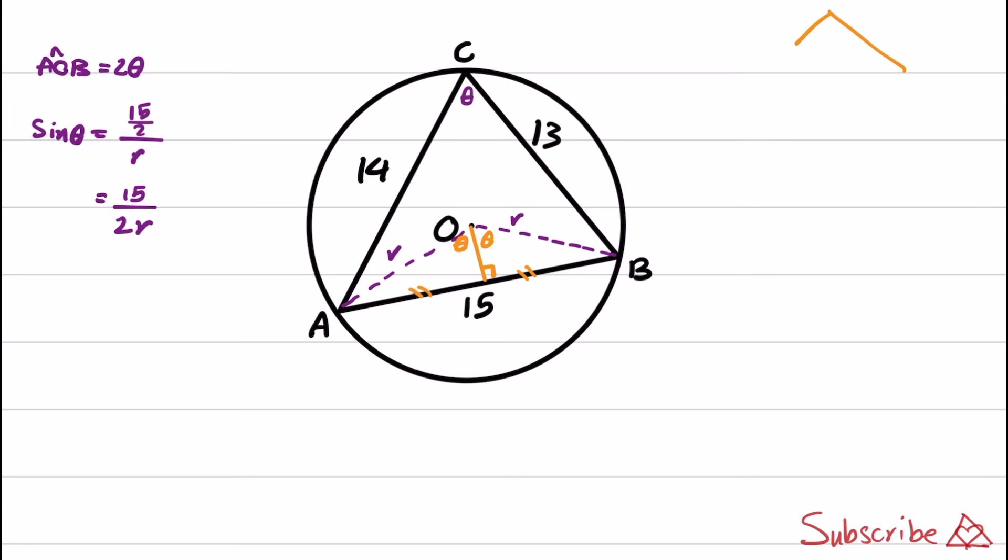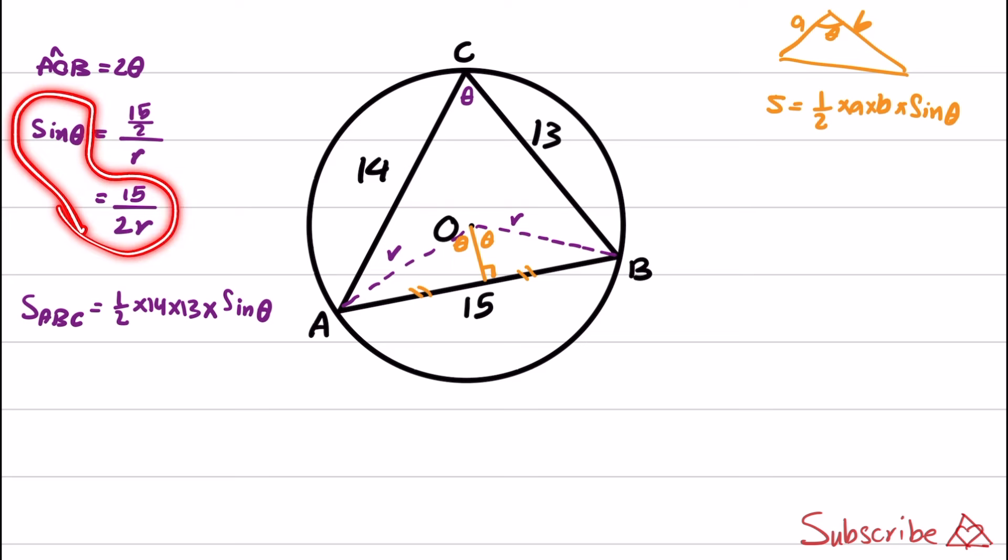Another hint that I will use is that in a triangle, when we have sides as A and B and angle theta, the area is equal to 1/2 times A times B times sine theta. And if we apply this hint to triangle ABC, S_ABC equals 1/2 times 14 times 13 times sine theta. We obtain sine theta in the previous equation, so we can replace this.